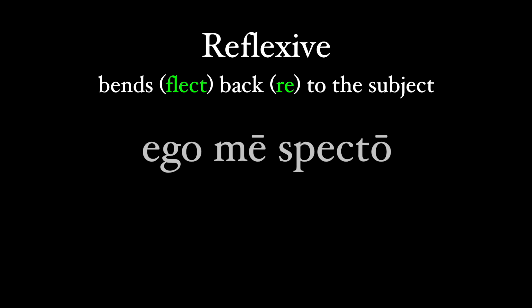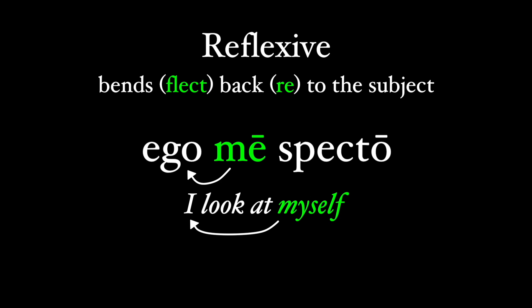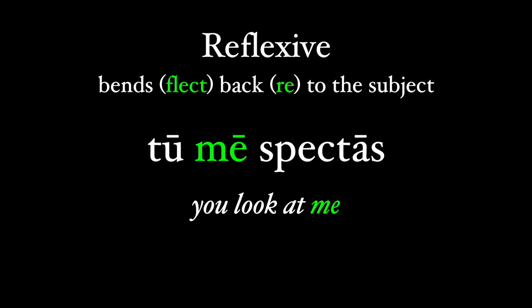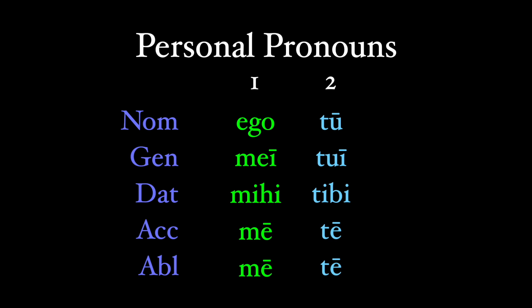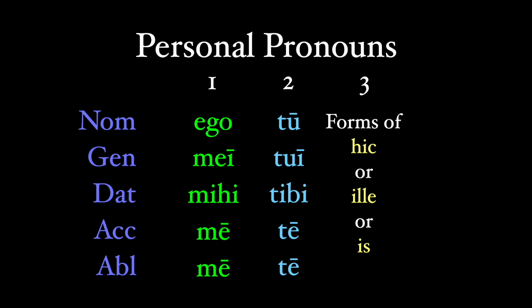In the phrase ego me specto, 'me' is technically reflexive because it's referring to the same thing as the subject, ego — both are the first person singular. If we change the subject to tu, though, the me isn't reflexive anymore. So ego and tu are first and second person personal pronouns, and we use the forms of hic, ille, or is for the third person as the subject.